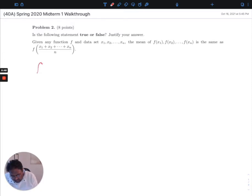Let's say that our function f of x is something like x squared. And I'll say x1 is equal to 1, x2 is equal to 3. So let's calculate both of these quantities and see if they happen to be equal in this case.